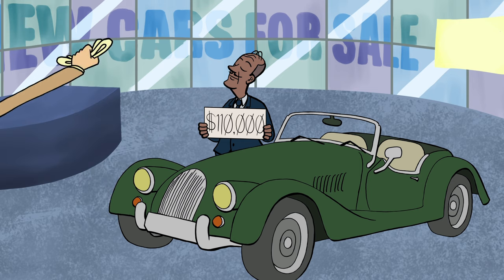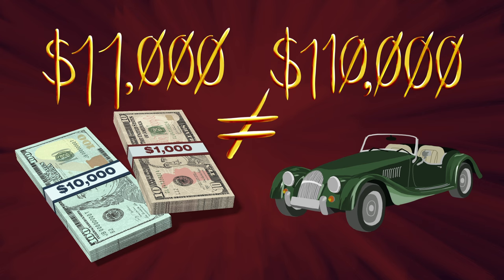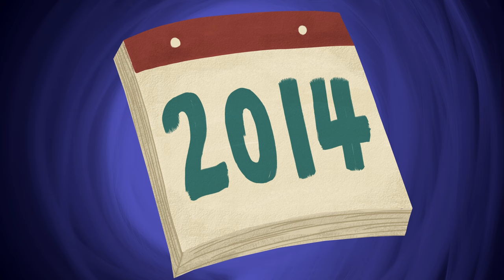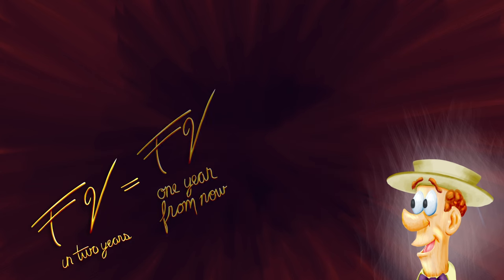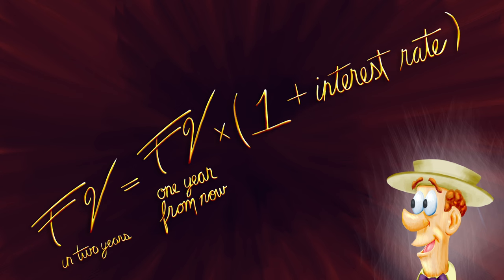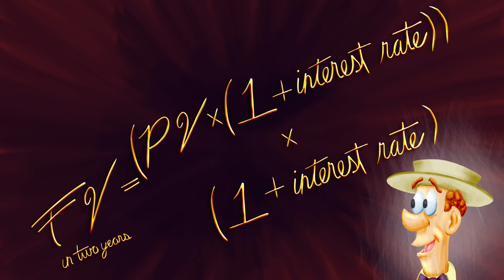You see, Timmy, just like Sheila, after the first year you'll have $11,000. But Timmy, that is still not enough to buy that fancy car. Why don't you leave the money deposited for another year? Let's see how your deposit would be doing in two years. With a little bit of rearranging, it becomes the value of your money next year times 1 plus the interest rate. We can then convert the future value one year from now to the present value times 1 plus the interest rate.